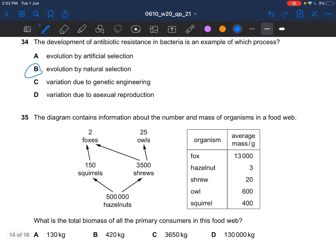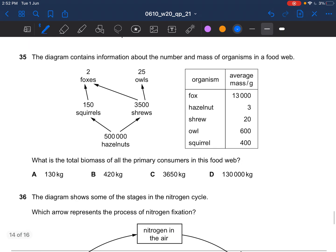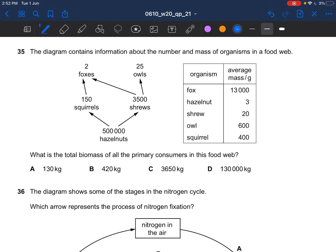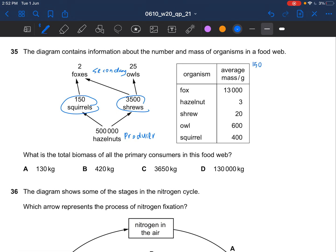Next question. The diagram contains information about the number and mass of organisms in a food web. What is the total biomass of all the primary consumers in this food web? First of all we have to identify which is the primary consumer. This is the producer, this is the secondary. So we multiply, do some math. The squirrel 400 grams times 150. Then you will get this one but it is in grams but the answer is in kilograms so you have to convert to kilograms. 1 kilogram equals to 1000 grams.